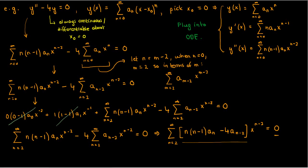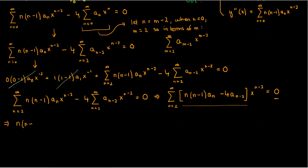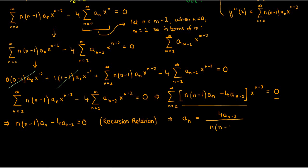Since the right-hand side is 0, all the coefficients on the left-hand side must be 0, since x isn't always 0. So a_n·n(n−1) − 4·a_(n−2) equals 0, and this is what we call our recursion relation. It relates the nth term in the sequence of coefficients to terms that occurred previously in that sequence. Solving for a_n gives a_n equals 4·a_(n−2) over n(n−1).